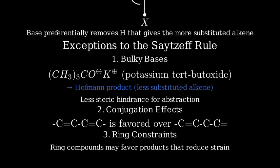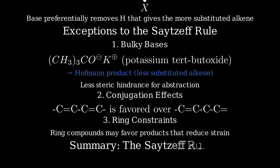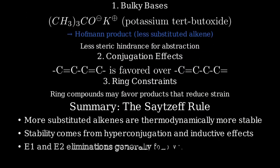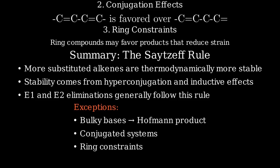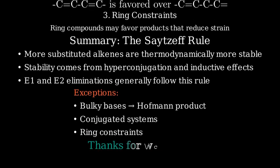Let's summarize what we've learned about the Zaitsev rule. The Zaitsev rule predicts that elimination reactions will predominantly form the more substituted alkene due to its greater stability. This stability comes from hyperconjugation and inductive effects. However, there are important exceptions with bulky bases, conjugated systems, and cyclic compounds. This explains how the Zaitsev rule works and why more substituted alkenes are usually the major products in elimination reactions.